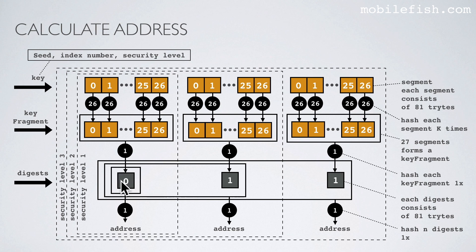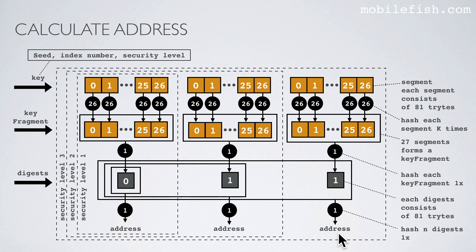For security level 1 you only have one digest and you hash it one time to get the address. If you have selected security level 2, you combine this digest and this digest together and hash them one time to get the address. And if you have selected security level 3, you take three digests together, hash them one time to get the address. Please remember, to create an address you start hashing the segments 26 times.